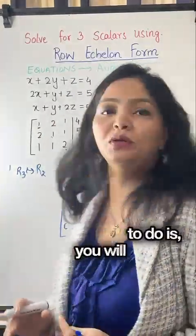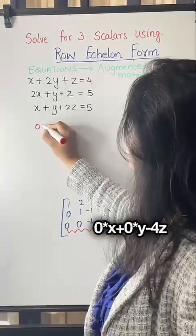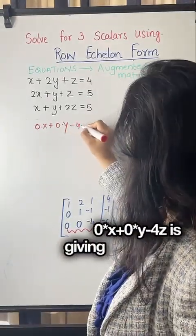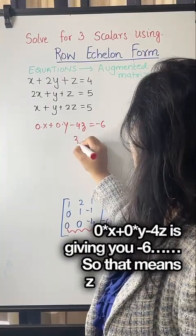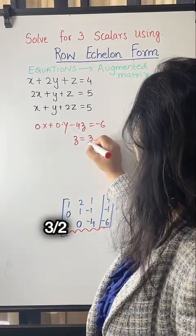Zero times x plus zero times y minus four times z is giving you minus six. So that means z is equal to three by two.